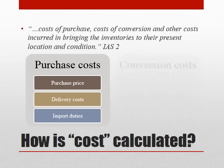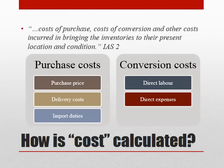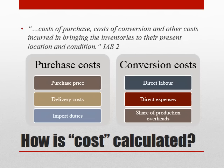On top of purchase costs, there are also conversion costs that we would need to include in our cost figure. So we're looking at the direct labour costs incurred when working on the goods. We'll also include any direct expenses that have been incurred in getting those inventories to their present condition. And we will also include an appropriate share of production overheads, which might be calculated using absorption costing, activity-based costing, or some of the other costing methods that exist.